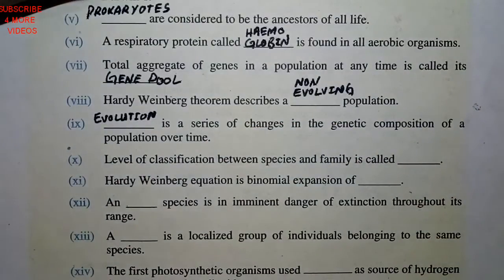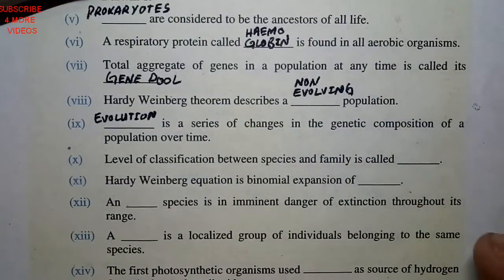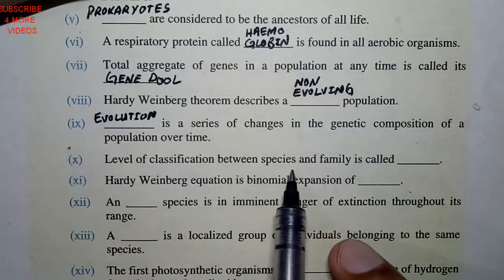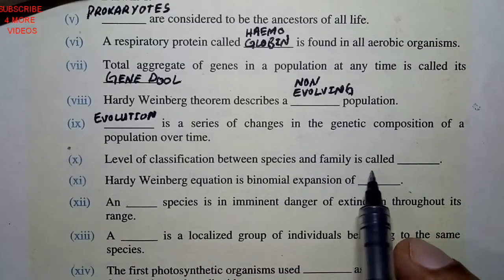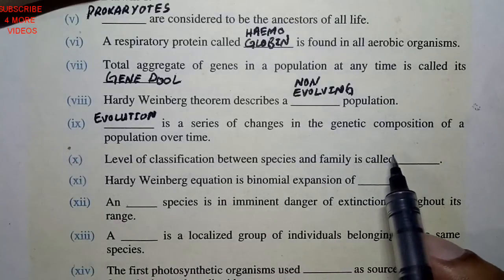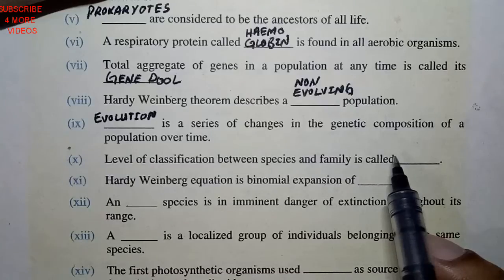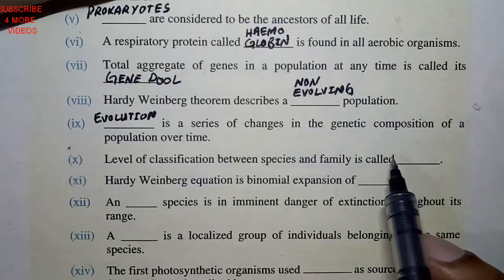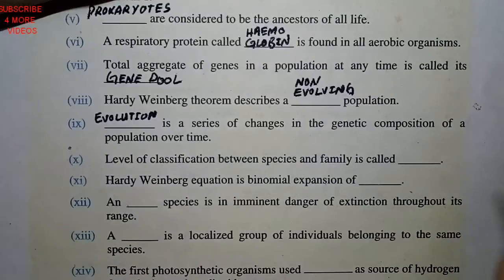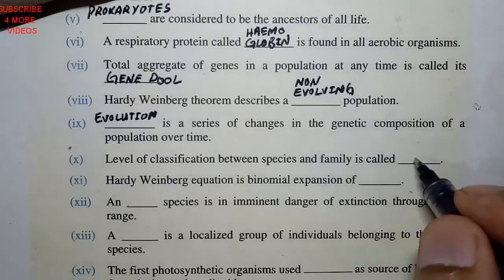The classification between species and family: if you have to go to the classifications, species and family — the genus is in between. That is enough.